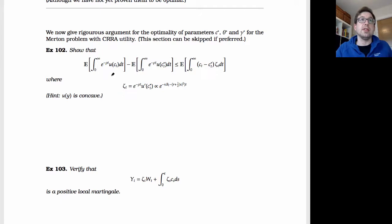The first thing to ask is to show that if I look at the utility I get out of some policy with consumption C of t, and I compare it with the optimal policy C star of t, then this is less than the expected value of this integral here, where I look at the difference between C of t and C star of t times the multiple times the function zeta of t, which is given by this. And the answer to this is fairly straightforward.